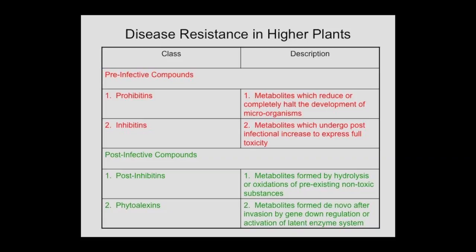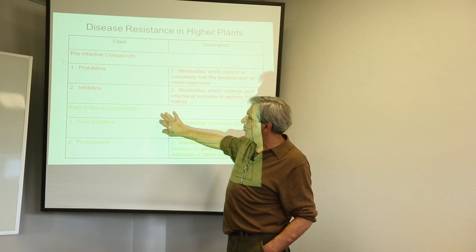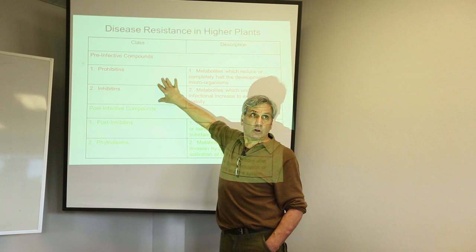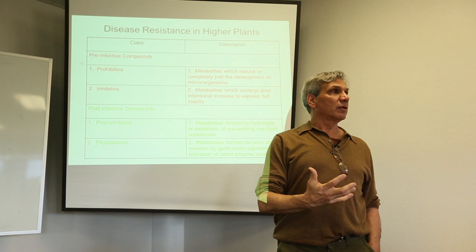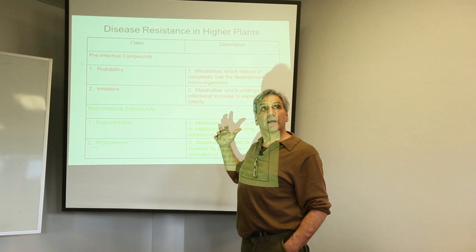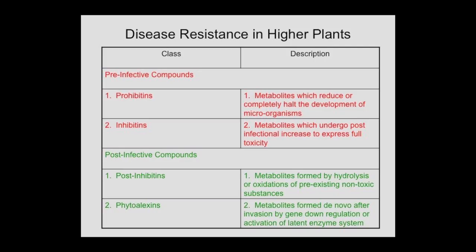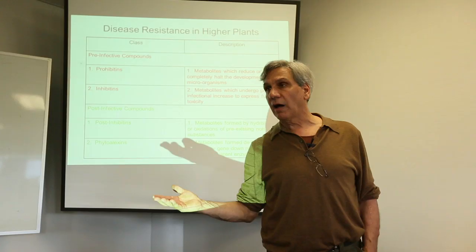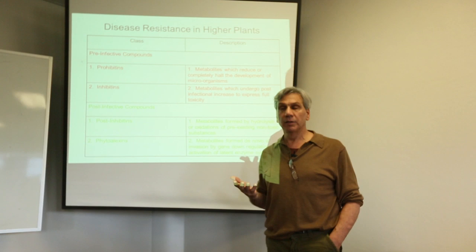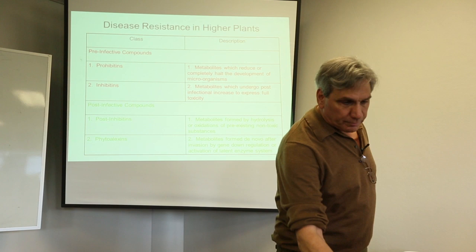Disease resistance in higher plants falls into four groups. Before infection, there are prohibitins and inhibitins already present — the innate immune system of the plant that disallows organisms from infecting. After infection, if the plant is still strong enough to ward it off, it produces post-inhibitins and phytoalexins — like plant antibodies — as immune responses.